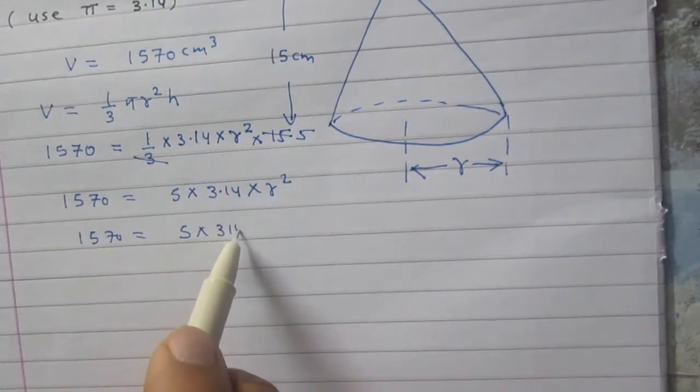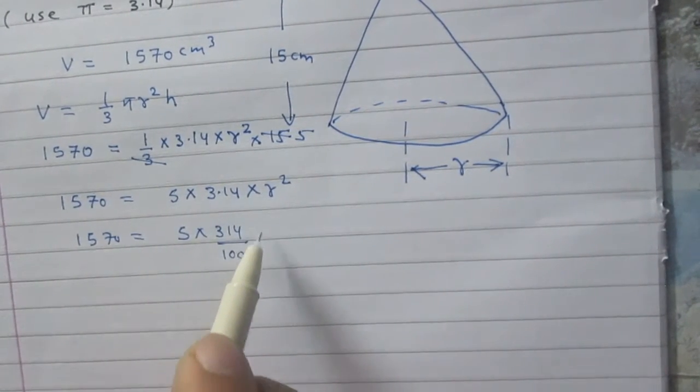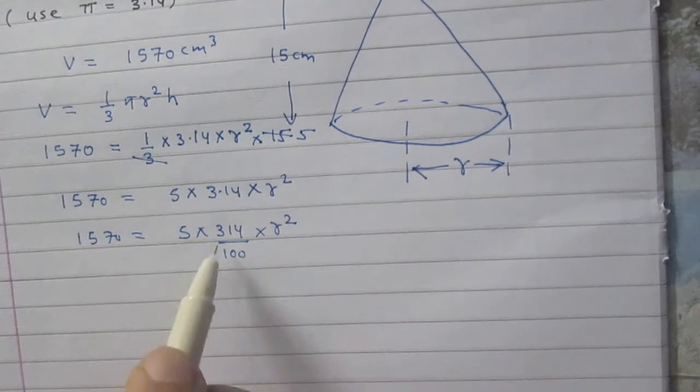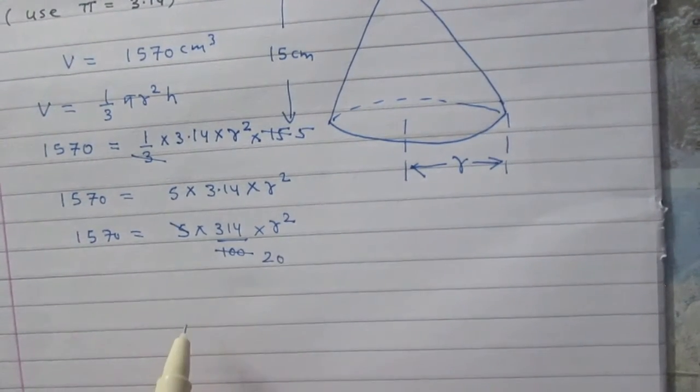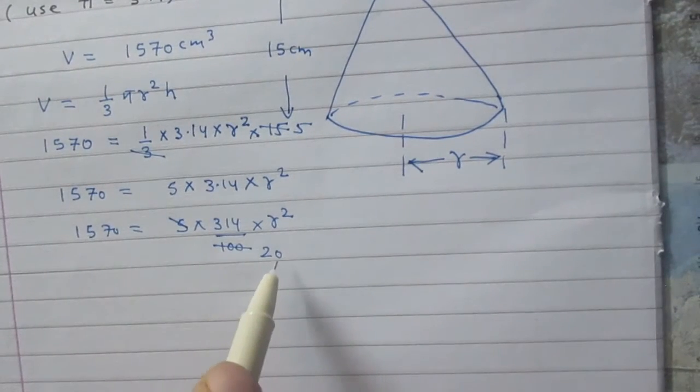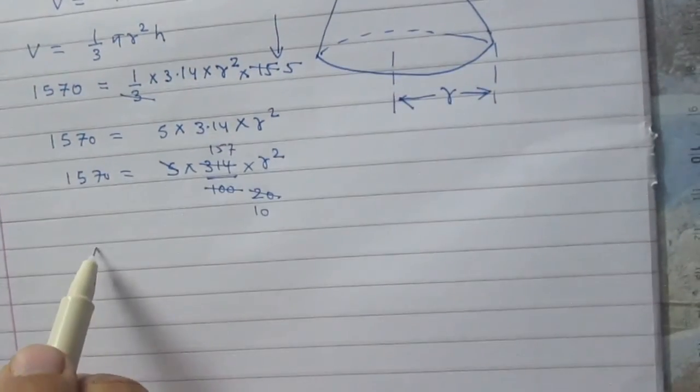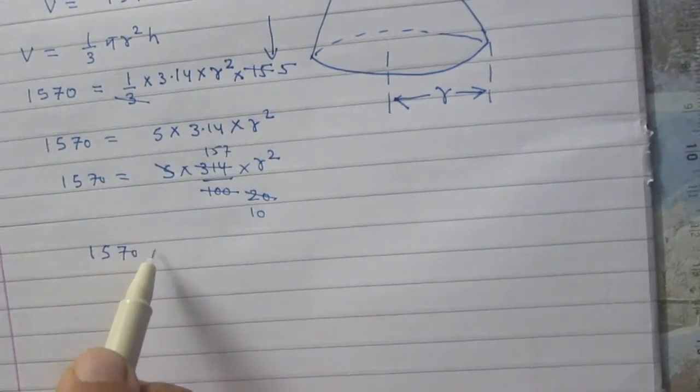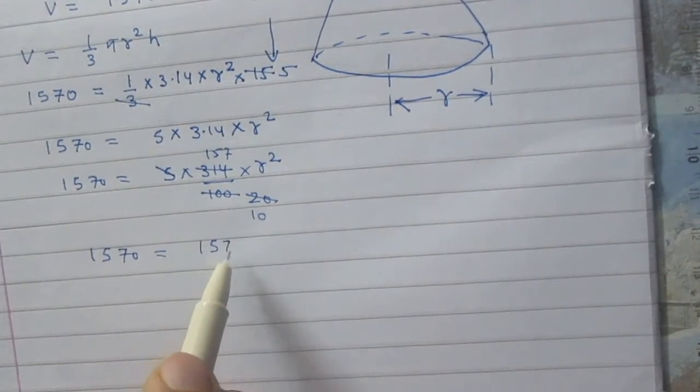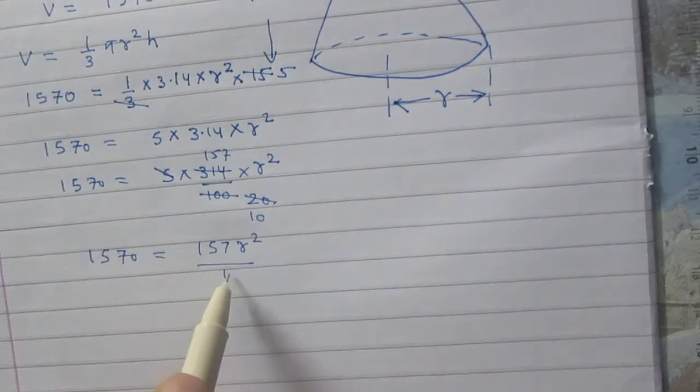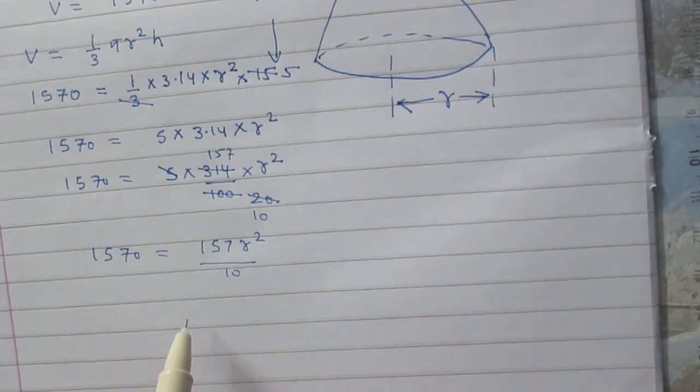Further simplifying, we get 1570 = (5 × 3.14 × r²)/1 = (5 × 314 × r²)/100 = (157 × r²)/10.